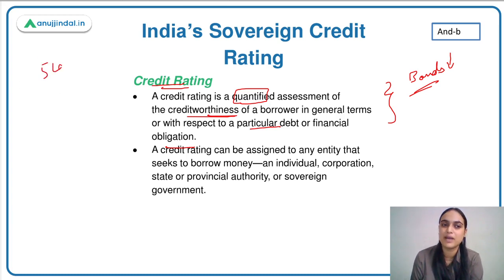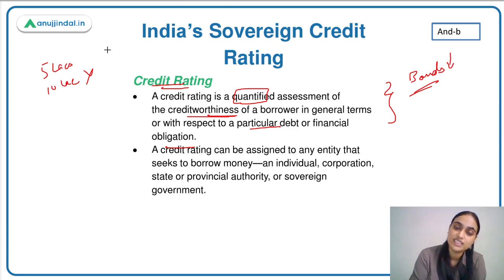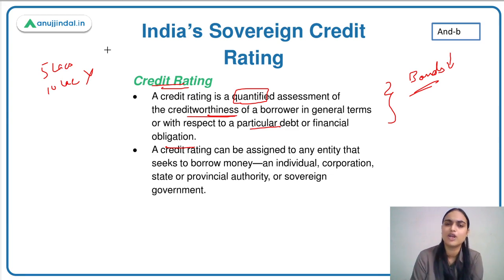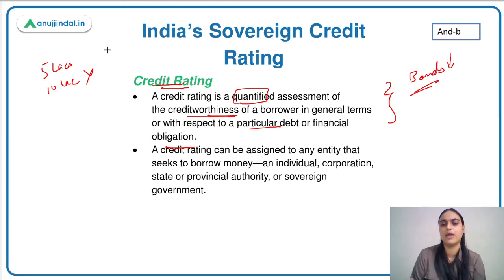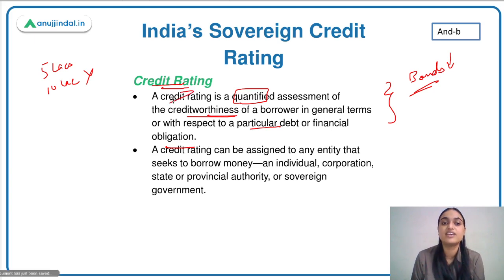If a person can only pay 5 lakhs, the bank won't give them 10 lakhs. They will check cash flows, financial position, and assets available as collateral, as well as whether they have a secure job. After all that assessment, a bank gives you a loan. Similarly, if you are lending to a company by buying its bonds, you need to check whether they are creditworthy. A rating is given by certain firms called credit rating agencies, which provide ratings to different companies.